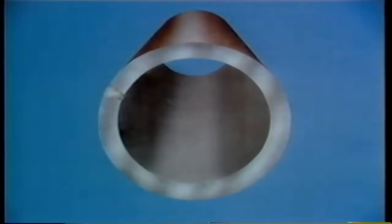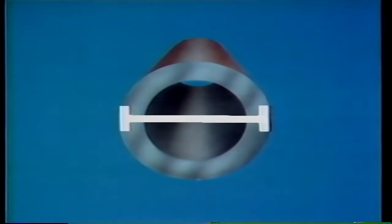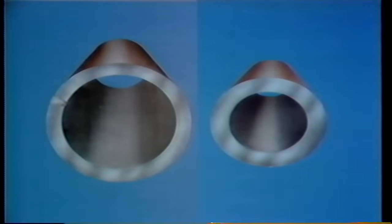Boiler tubes also usually have thicker walls than ordinary pipe. Another difference between pipes and tubes is the way their size is measured. Most pipe sizes are based on the inside diameter of the pipe. Tube sizes, on the other hand, are based on the outside diameter of the tube. So when the same size of pipe and tube are put side by side, it's obvious that there is quite a difference.